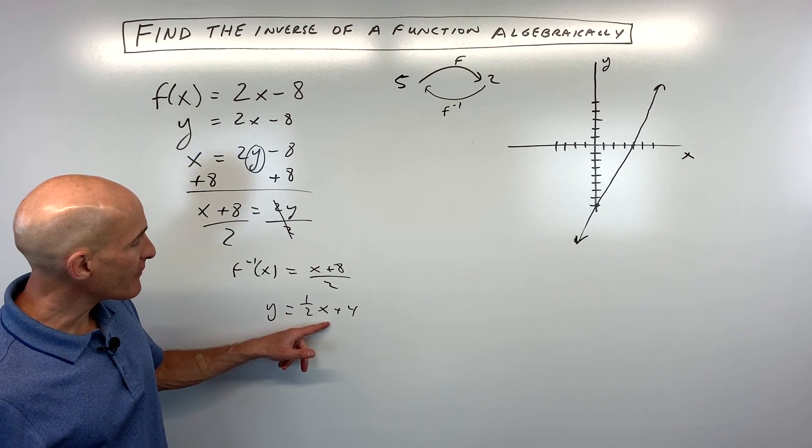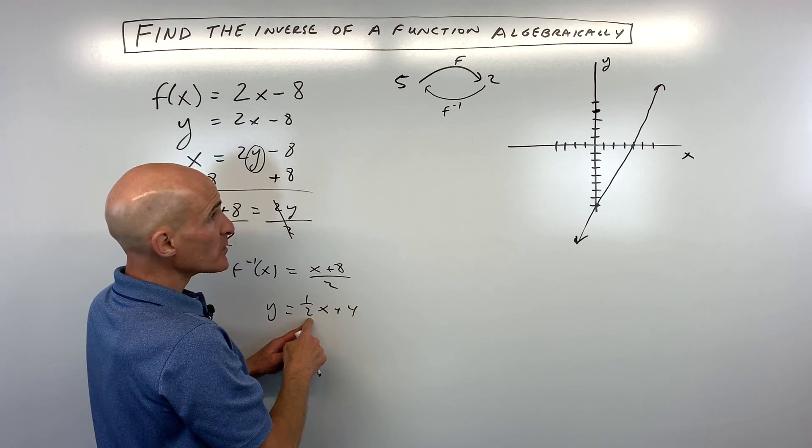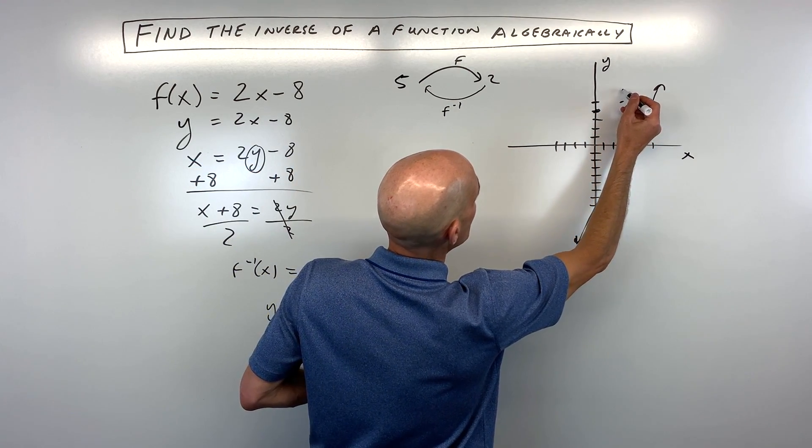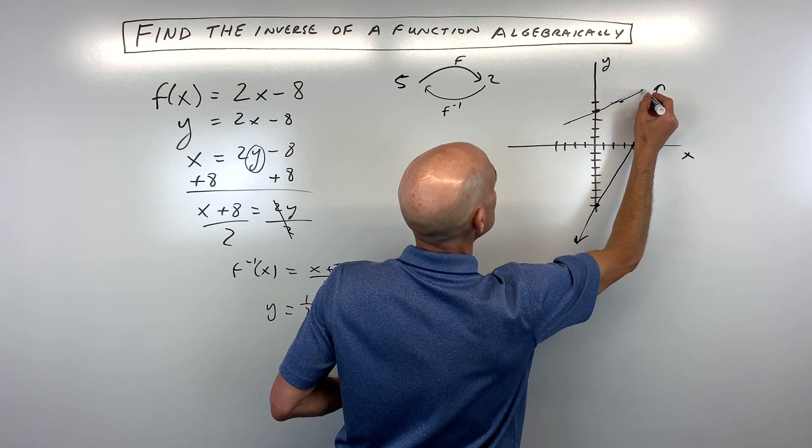Also what you can do is if you graph this, the y-intercept is 4 and the slope is 1 half. So we're going up 1 over 2, up 1 over 2, and our graph is going to look something like this.